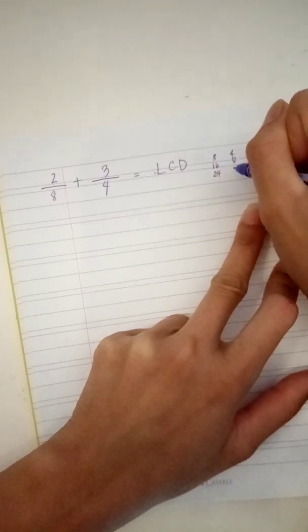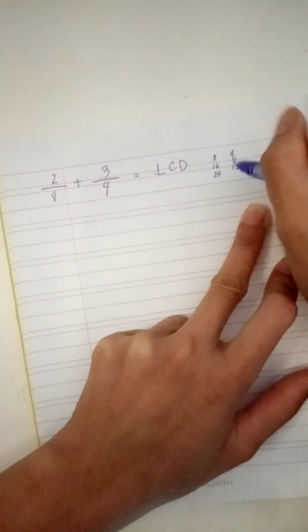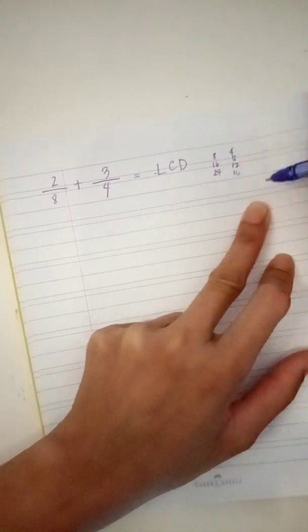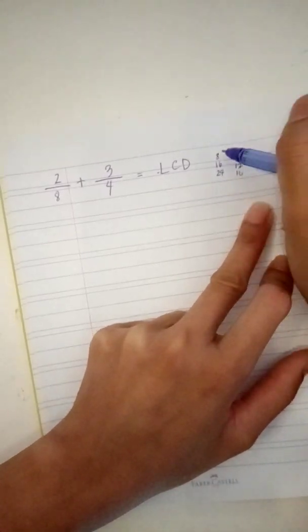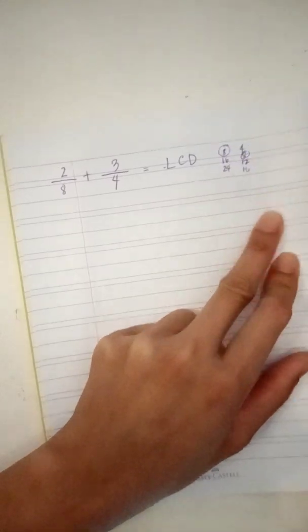Four, eight, twelve, sixteen. What is the least common denominator? The eight. See? Eight, eight.